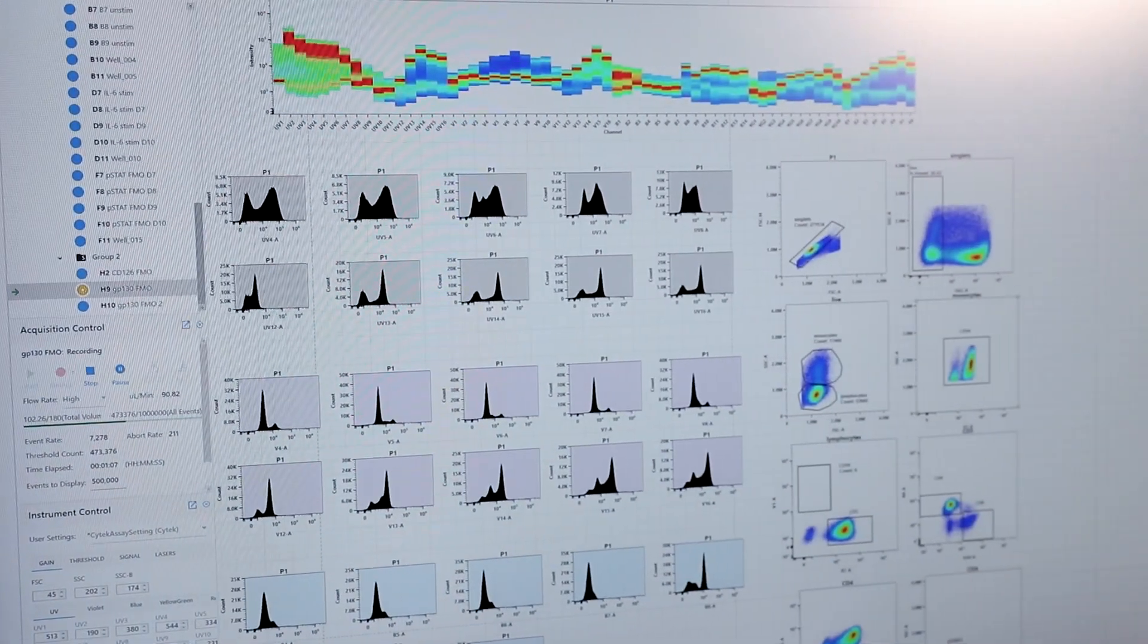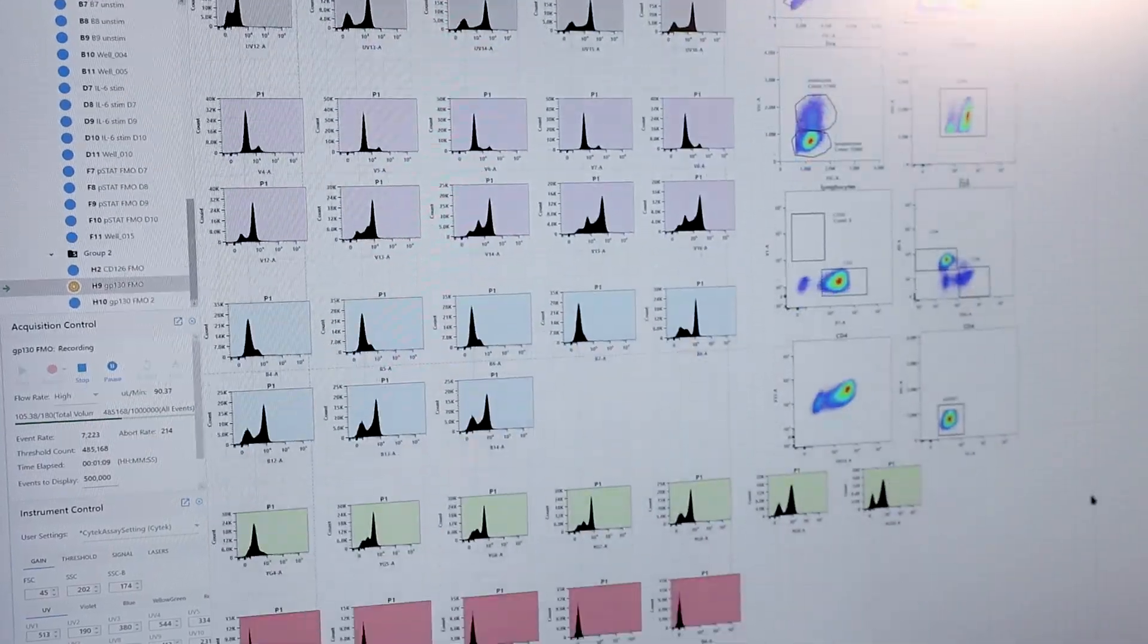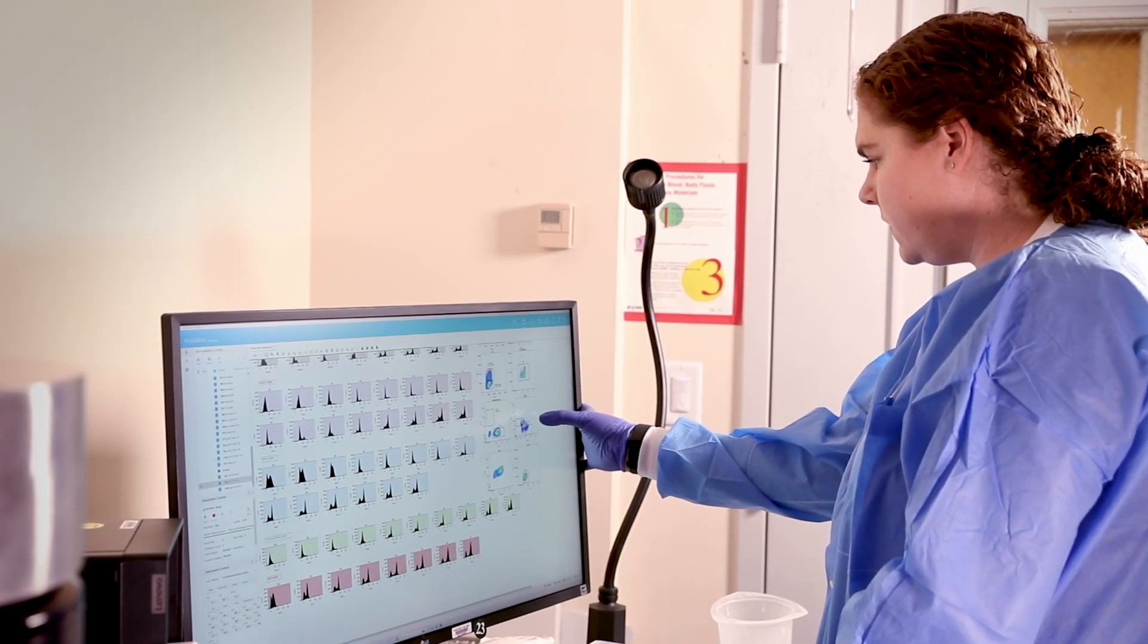Now we look at the entire spectrum, and it enables us to use more fluorescent tags. We can do up to 50 tags at the same time.